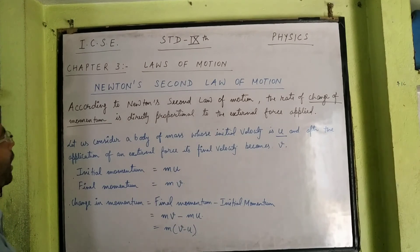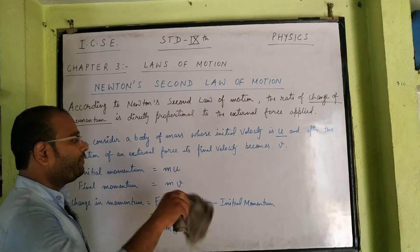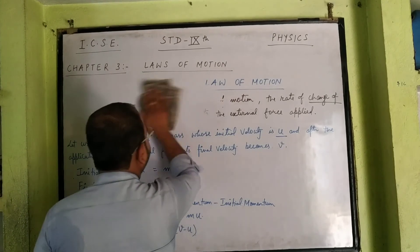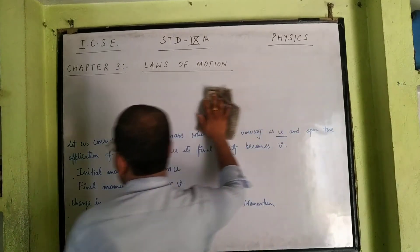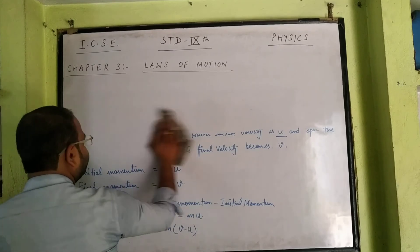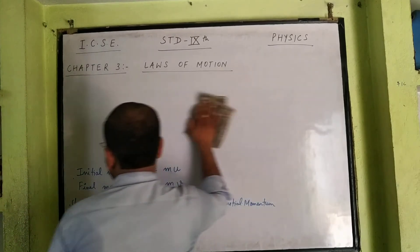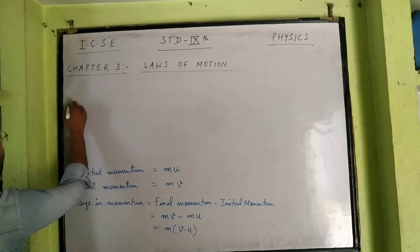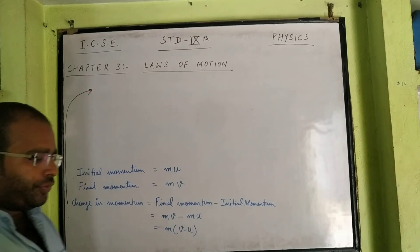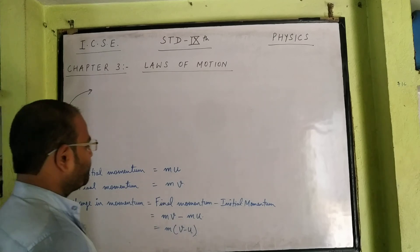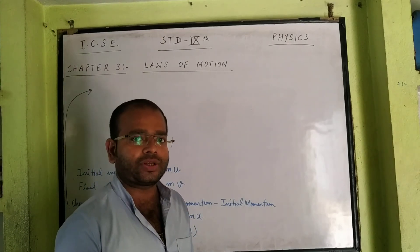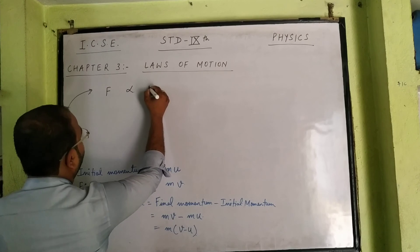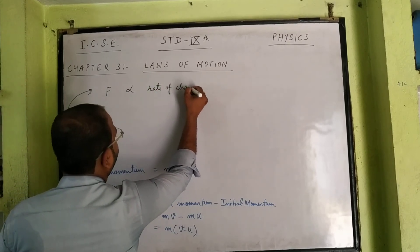Continuing from here, according to the statement of Newton's 2nd Law, the rate of change of momentum is directly proportional to the applied force. This means the force applied is directly proportional to the rate of change of momentum.